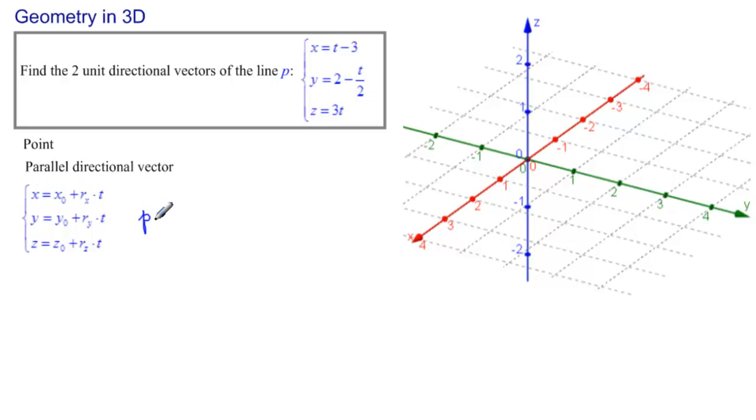We would have P equals, here we have X equals the constant is minus 3 plus the coefficient of T is 1, then Y equals the constant is already up front, but the coefficient of T we're going to pull out in front of T, so it's minus 1 half times T. And then Z is equal to, there's no constant, so we'll write 0 plus 3T.